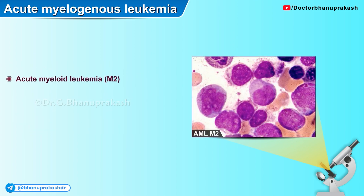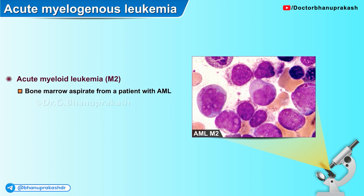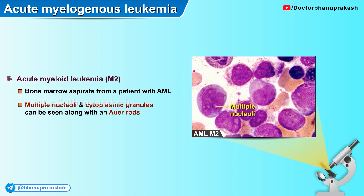Here is another histopathological image of acute myeloid leukemia. In this image, you can appreciate a bone marrow aspirate of a patient with AML, and at this level of magnification, the multiple nucleoli and the cytoplasmic granules are finely appreciated along with the narrow Auer rods which are seen in this cell.